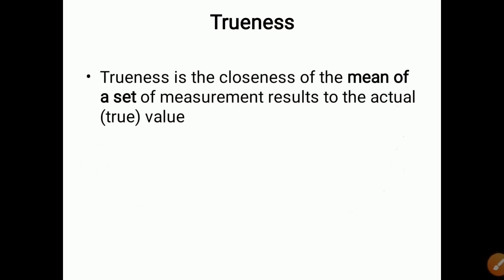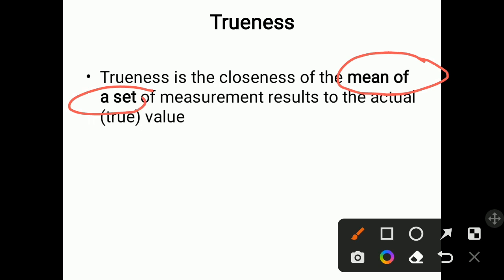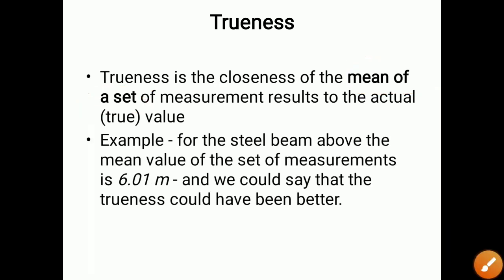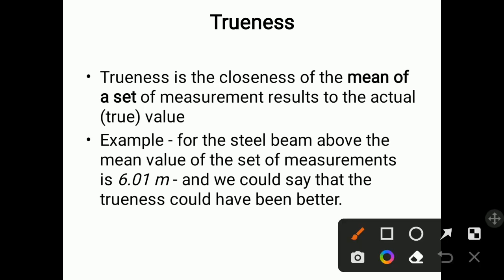Now, trueness: trueness is the closeness of the mean of a set of measurement results to the actual value. You take the mean of all the measurement results and if that mean is close to the true value, it is called trueness. For the steel beam example, the mean value of the set of measurements is 6.01 meter, and we could say that the trueness could have been better.